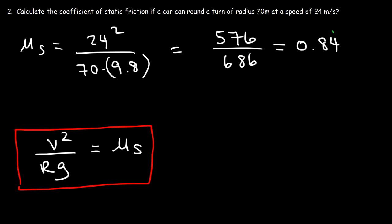So that's the coefficient of static friction that will allow the car to make a turn of radius 70 meters at that speed.